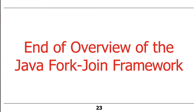That's the end of the overview of the Java ForkJoin Framework. Obviously there's a lot more to it — this is just the high-level view of taking a data source, forking it up into subtasks, and then ultimately joining the results of those subtasks back together to create a final composite result.